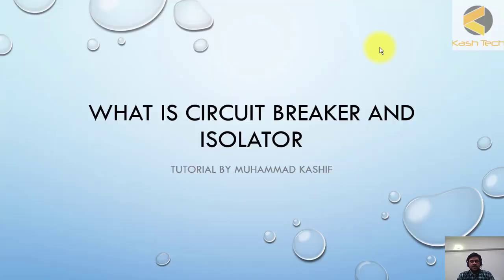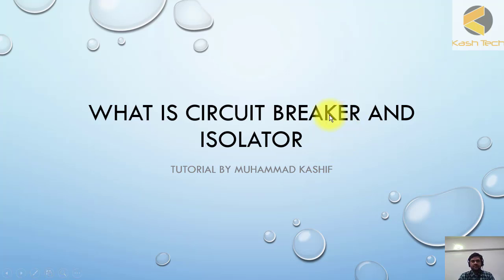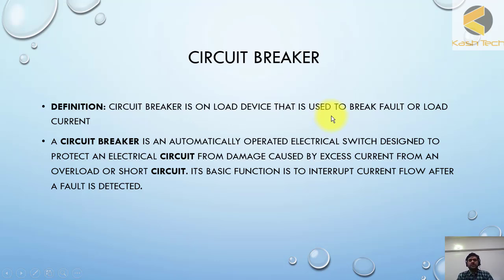Welcome. Let's start our new topic — one of the very important components when we study production and control circuits: the circuit breaker and isolator. I prepared a separate lecture on these topics so you will be able to understand them. Circuit breaker: what is a circuit breaker? A circuit breaker is an on-load device used to break fault or load current. Another definition: a circuit breaker is an automatically operated electrical switch designed to protect an electrical circuit from damage caused by excess current from an overload or short circuit. Its basic function is to interrupt current flow after a fault is detected.